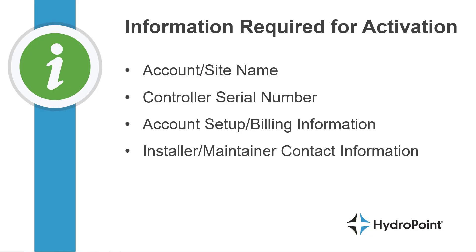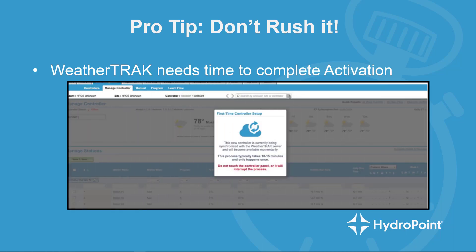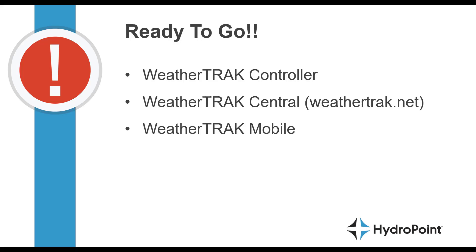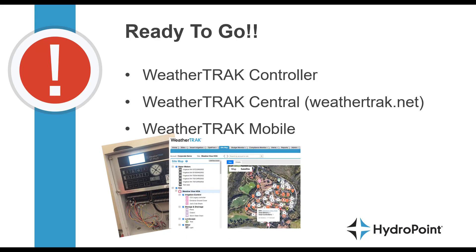You'll need the account or site information, the controller serial number, the billing information, and the contact information for anyone you want assigned to the controller. Once the controller comes online, WeatherTrack will still need a few minutes to complete the activation — you'll see a message indicating that the controller is synchronizing with the server and will be available momentarily. Usually this first-time sync takes about 10 to 15 minutes. Once the first-time controller setup is complete, your WeatherTrack controller activation is complete and you can begin WeatherTrack programming from the controller, from WeatherTrack Central, or from WeatherTrack Mobile.